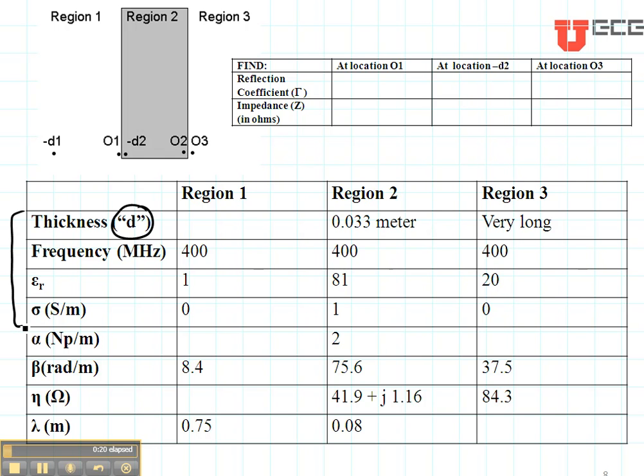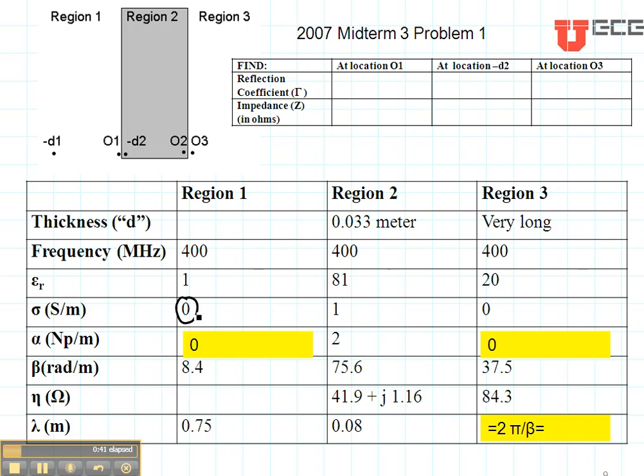Using Table 7.1, we would be able to calculate alpha, beta, eta, and lambda. On exams, I typically calculate portions of these for you because you don't have enough time on an exam to just punch your calculator for all of the equations. So, for instance, for this case, the values that were left out were when sigma equals zero, our attenuation constant is always zero, as shown here.